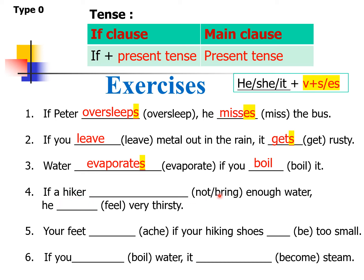Number four — a little tricky: 'If a hiker not bring enough water, he feel very thirsty.' A hiker is singular — it can be he or she. So do we use 'do not bring' or 'does not bring'? The answer is 'does not bring' because a hiker is third person singular. So: if a hiker does not bring enough water, he feels very thirsty — adding s to 'feel' because of 'he.'